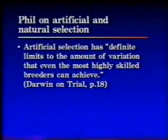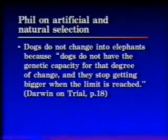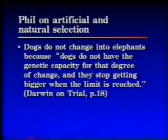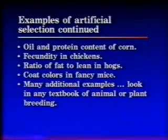Let's look at Phil on artificial and natural selection. He just told you that artificial selection has definite limits to the amount of variation that even the most highly skilled breeders can achieve. Dogs do not change into elephants because, quote, dogs do not have the genetic capacity for that degree of change, and they stop getting bigger when the limit is reached. Well, Phil, there's the bull. Breeders do, in fact, run out of heritable variation sometimes, but recombination and new mutation means that the limits Phil claims simply don't exist. Let's look at long-continued selection experiments.